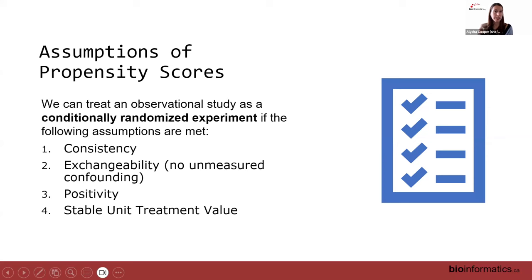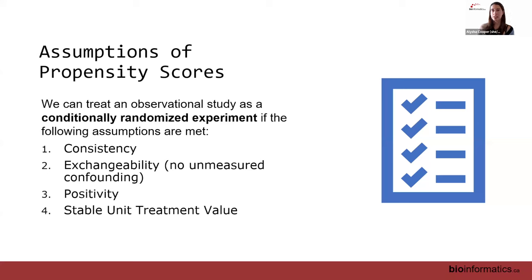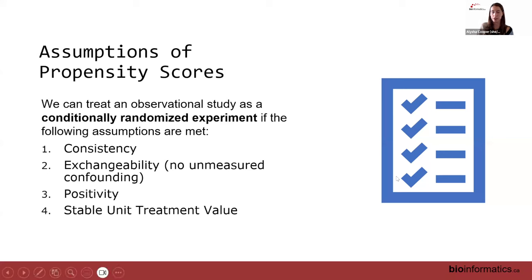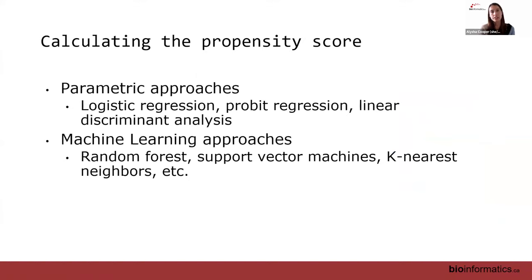The positivity assumption means each individual must have at least some possibility of being assigned to either treatment or control — no propensity scores of exactly zero or one; they're all bounded between zero and one. Finally, the stable unit treatment value assumption (SUTVA) means one individual's treatment does not impact another individual's outcome. With COVID vaccines, this could be violated: if enough people are vaccinated, others are less likely to catch the disease too.